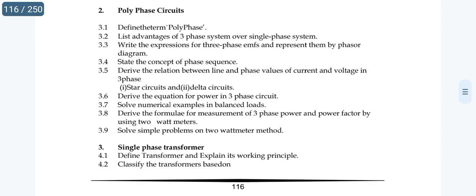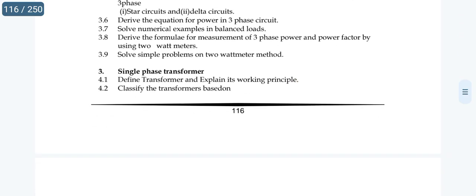For unit 3, do not choose delta circuit-related sums. Total scope is around 3.5 and 3.8 related sums. For star circuit scope, cover those topics. Also, define the term polyphase and the advantages of three-phase systems over single-phase systems — topic 3.2.